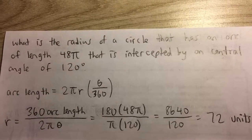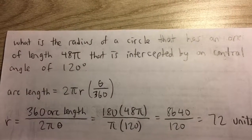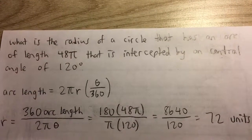What is the radius of a circle that has an arc of length 48π that is intercepted by a central angle of 120 degrees?